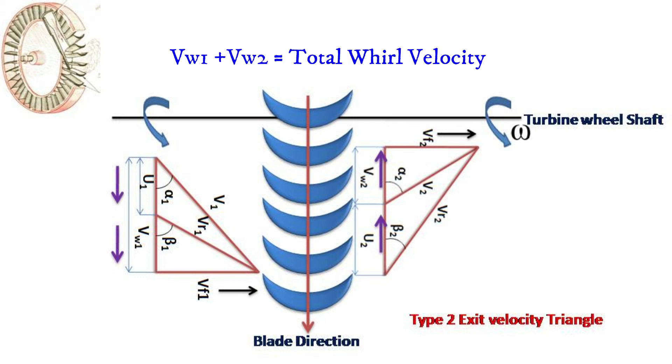It is multiplied by the mass flow rate of the steam to find out tangential force acting on the turbine blade.